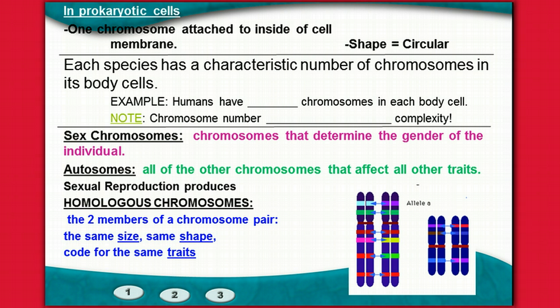In humans and animals, chromosomes are categorized based on what the chromosomes are actually for. In sexual organisms there's going to be a pair of sex chromosomes, which are the chromosomes that determine the gender of the individual. Autosomes are all of the other chromosomes that affect all of the other traits. Sexual reproduction, especially in humans and other higher organisms, involves homologous chromosomes — homo meaning the same. Homologous chromosomes are two members of a chromosome pair that are the same size, same shape, and code for the exact same traits.